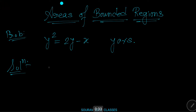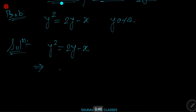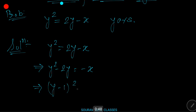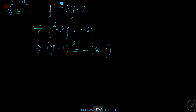The equation of the given curve is y² = 2y - x, which implies y² - 2y = -x, and then we get (y - 1)² = -(x - 1). Clearly, the equation represents a parabola with vertex (1, 1) that opens to the left.